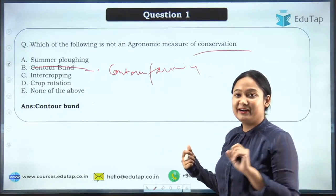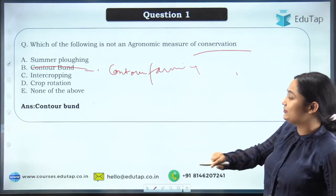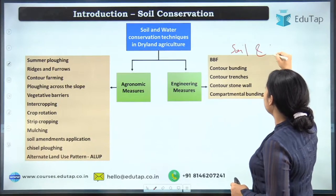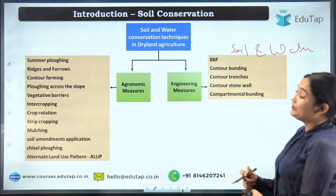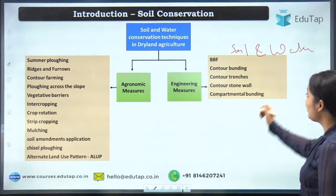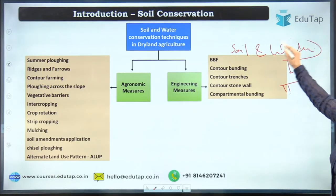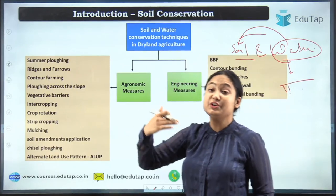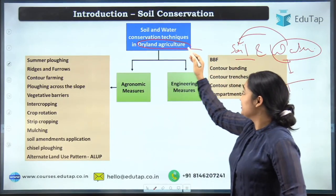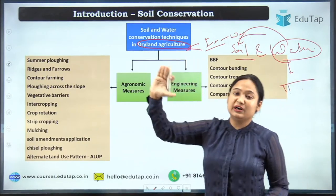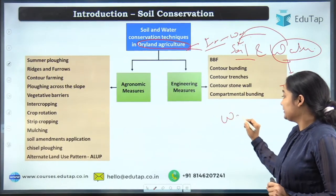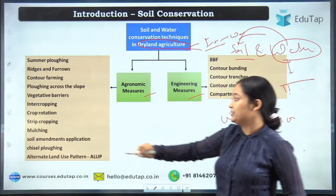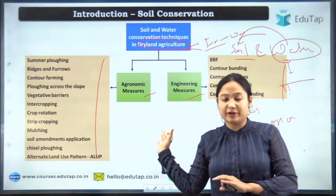Soil and water are important for your crops, so we need to conserve them. Due to air and water movement, they carry soil particles — if soil cannot hold water, water erosion occurs. That's why soil and water conservation are usually discussed together. In dryland conditions where irrigation is limited, you also need to conserve water. There are two types of conservation measures: agronomic measures and engineering measures.